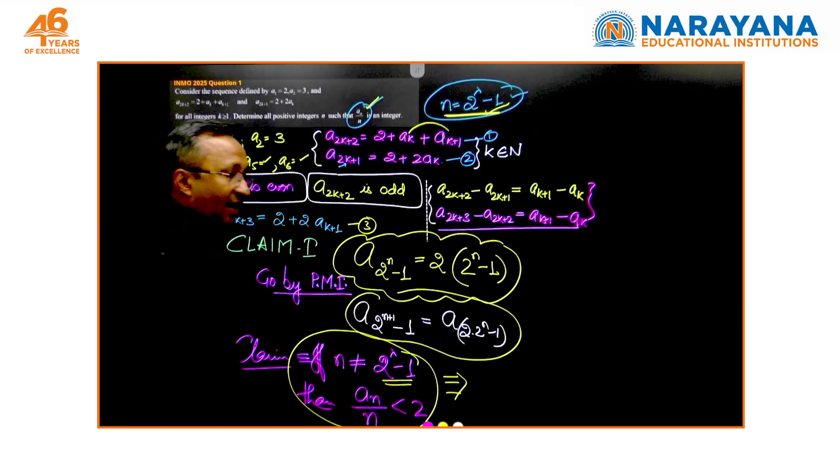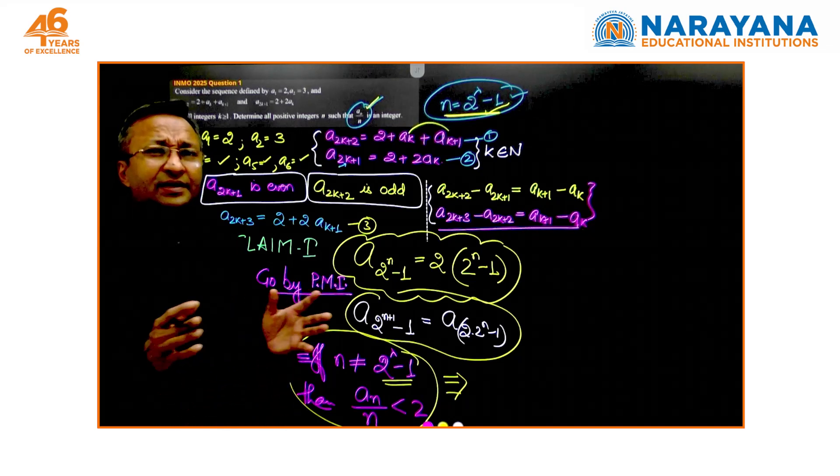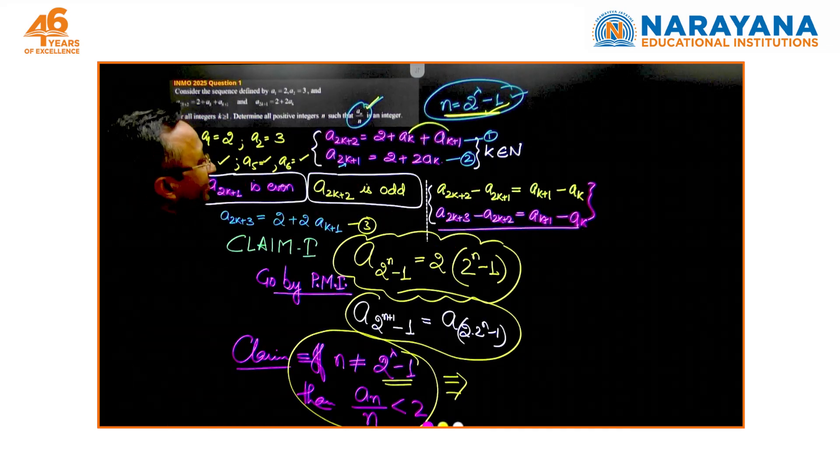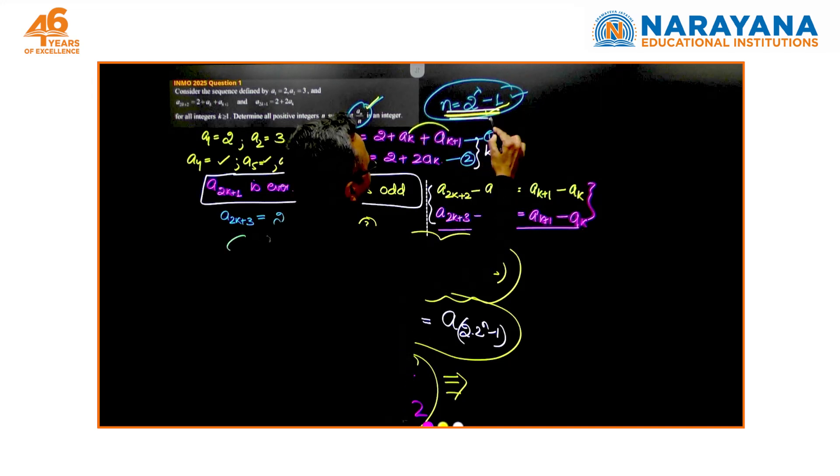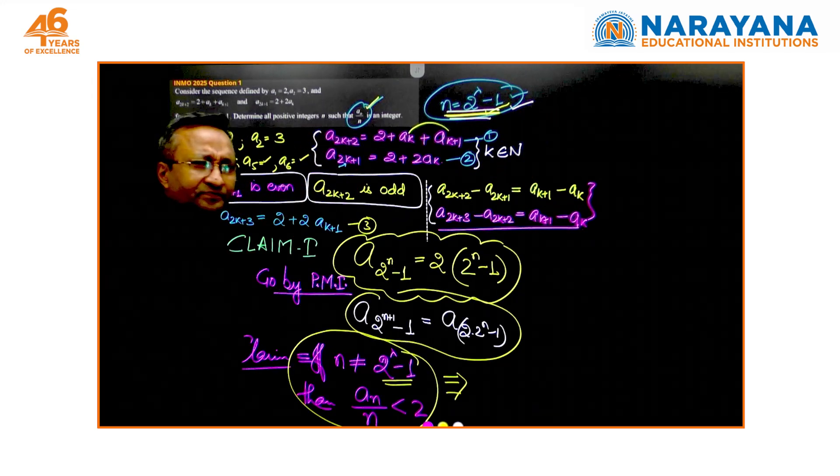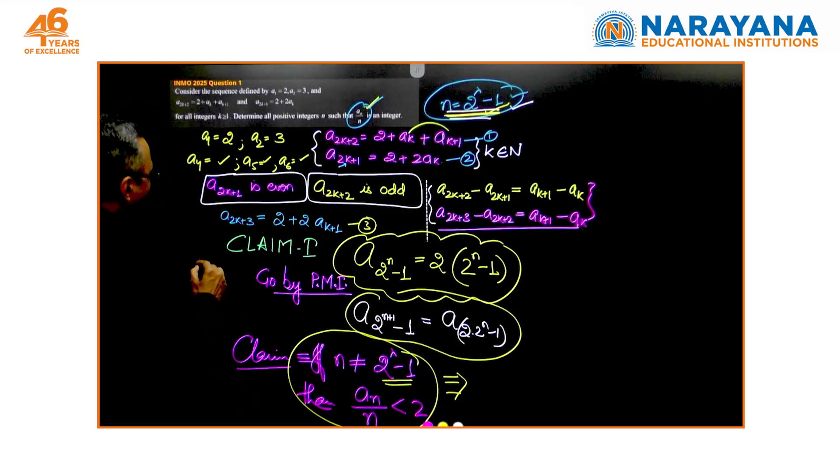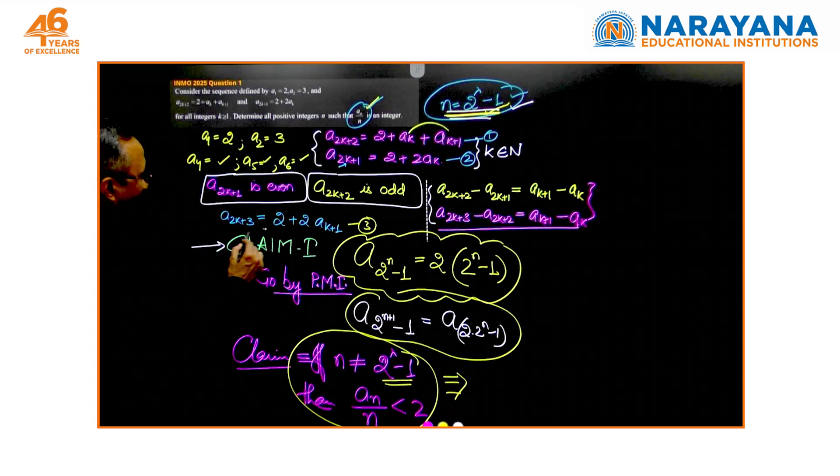Many of the students have mentioned that they have written the series up to a large number of terms and have realized that this is going to work. Is this good? The answer is no. You have to have some logical reasoning behind this. So we have a claim. Where do you get the idea of the claim? Of course, by the numbers.